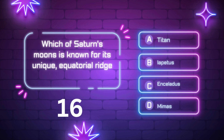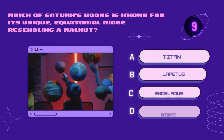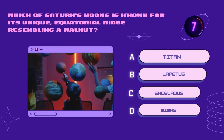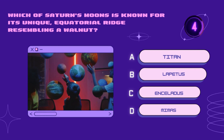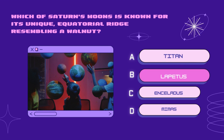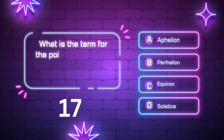Which of Saturn's moons is known for its unique equatorial ridge resembling a walnut? Titan, Enceladus, Iapetus, Mimas. Your time starts now. Right answer is Iapetus.